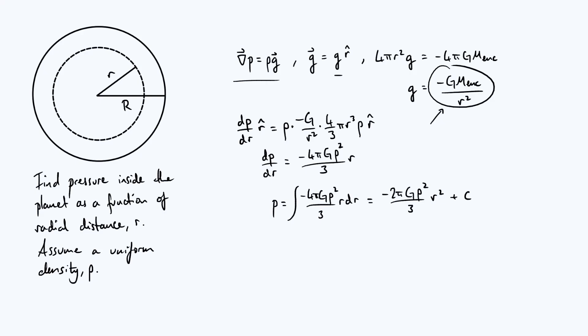So by that logic, the pressure at the surface of the planet, when the radial coordinate is equal to the radius of the planet, capital R, the pressure should be zero because there's no material pushing down on you when you're at the surface of the planet. Here we're sort of pretending either that the planet doesn't have an atmosphere or that the atmospheric pressure is negligible. But in any case, mathematically that would be expressed as P evaluated at capital R is equal to zero.